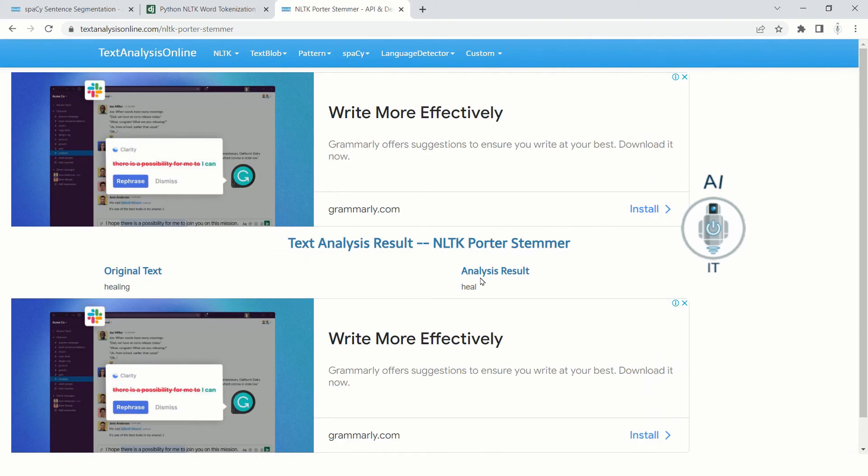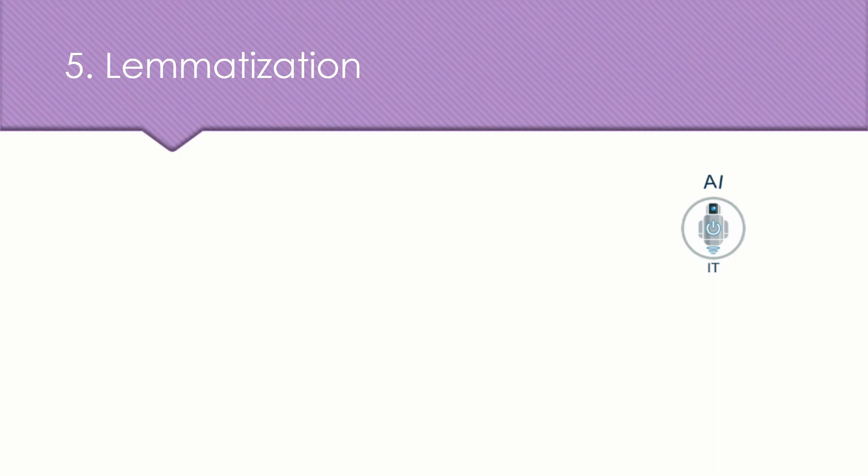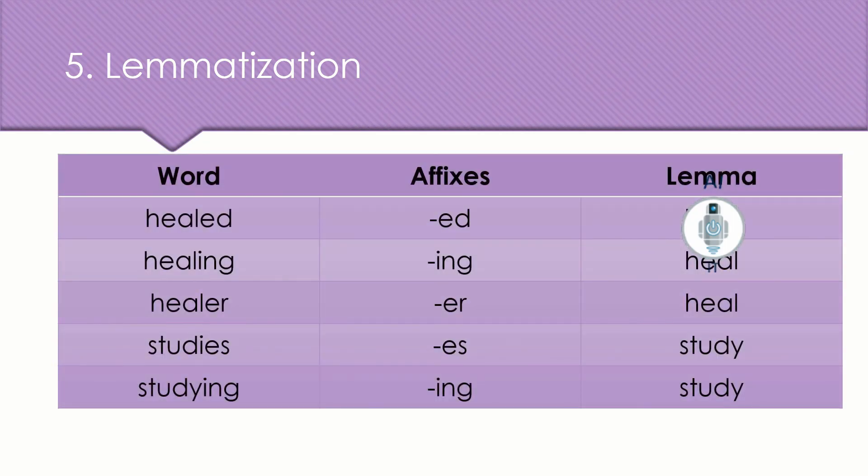Lemmatization is also a similar process which is going to remove the affixes. But here it makes sure that the base word which it is going to give as a result called lemma is a meaningful word. And it is the right base word. Now, if you give the same words and use lemmatization on it, you find that the affixes are getting removed here and the resulting word is the right base word and a meaningful one. So if you take studies here, it is going to result in the word study, S-T-U-D-Y.